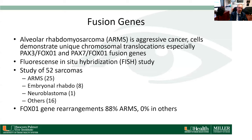For prognosis, we look at fusion genes. Alveolar rhabdomyosarcoma is a more aggressive cancer and cells demonstrate unique chromosome translocations, especially at the PAX3-FOXO1 and PAX7-FOXO1 fusion genes. We study these using FISH — fluorescence in situ hybridization. One study of 52 sarcomas found the fusion gene present in 25 cases of alveolar, 8 embryonal, 1 neuroblastoma, and 16 others.